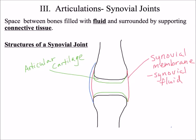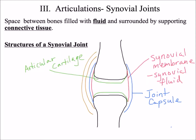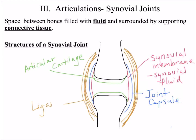Surrounding the synovial membrane is the joint capsule or fibrous capsule, whose function is to stabilize the joint. The last structure of a synovial joint is the ligament — a dense regular fibrous connective tissue that connects bone to bone. Ligaments can be found surrounding the joint or within the joint.